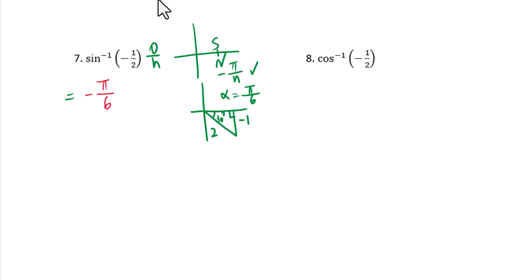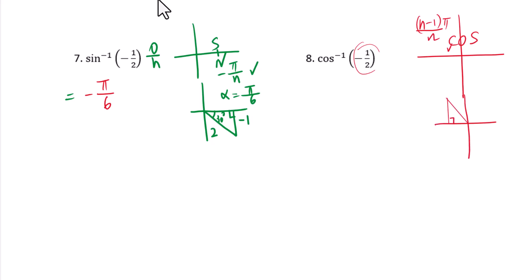Question 8: inverse cosine of negative 1 over 2. Since cosine is negative, go to the second quadrant. The pattern is (n minus 1) pi over n. For the reference angle, cosine equals adjacent over hypotenuse: negative 1 over 2, giving a reference angle of 60 degrees, which is pi over 3. Therefore, (n minus 1) pi over n gives 2 pi over 3.